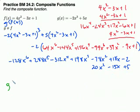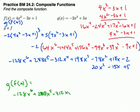I get my final answer g of f of x equaling negative 128x to the 6th plus 288x to the 5th minus 312x to the 4th plus 198x to the 3rd minus 58x squared plus 3x plus 3.